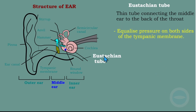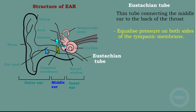The next part is the Eustachian tube. The Eustachian tube is a thin tube connecting the middle ear to the back of the throat. Its function is to equalize pressure on both sides of the tympanic membrane. The tympanic membrane needs to vibrate, and in order to vibrate, the pressure on each side must be equal. This tube connects to the throat and mouth, making the pressure on both sides of the tympanic membrane equal.